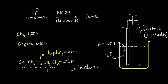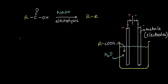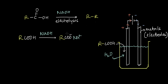The greater the number of carbons, the more insoluble the acid. To make these acids soluble in water, we add a base such as sodium hydroxide. The base deprotonates the acid, removing the hydrogen, leading to the formation of a carboxylate ion (RCOO⁻) and Na⁺, along with water. This salt is an ionic compound and is water soluble.